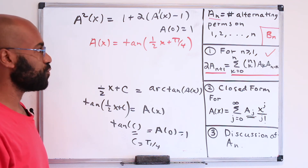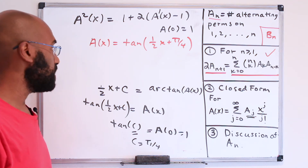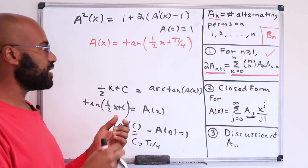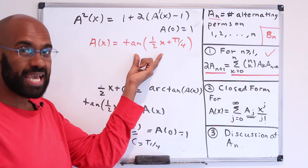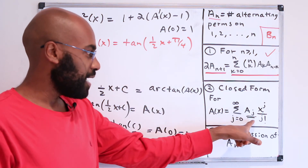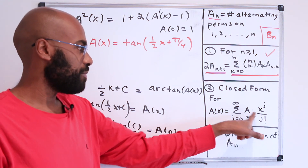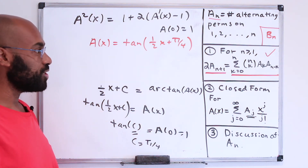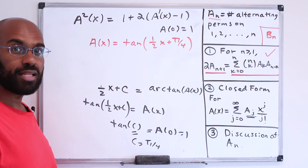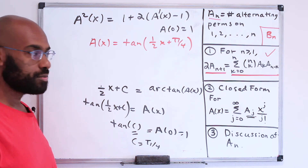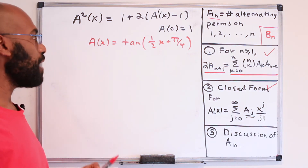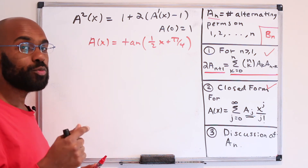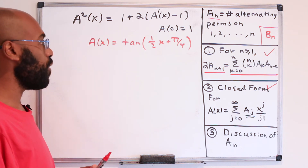This is actually remarkable. What this means is that if we go to a calculator and expand the Taylor series of tangent, we get as its coefficients — multiplied by j factorial — the number of alternating permutations on j elements. Before continuing, I want to take a little trigonometric aside because this is going to illuminate something quite interesting.